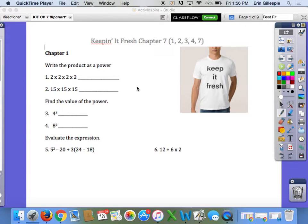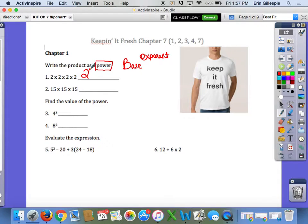This is your video for Keeping It Fresh, Chapter 7. Number 1, write the product as a power. Remember, a power is both a base and the exponent. So 2 times 2 times 2 times 2, your base is your repeated factor, so my base is 2. My exponent is how many times I multiply that factor by itself. So 2 to the 4th would be 2 times 2 times 2 times 2. For number 2, that would be 15 to the 3rd.